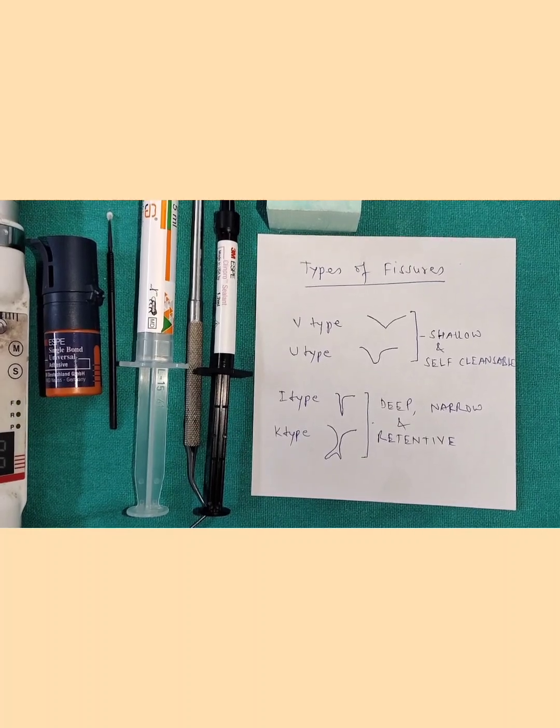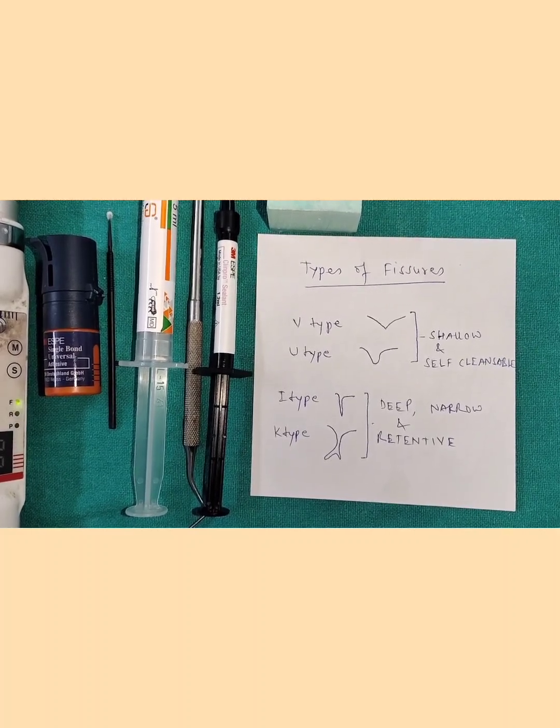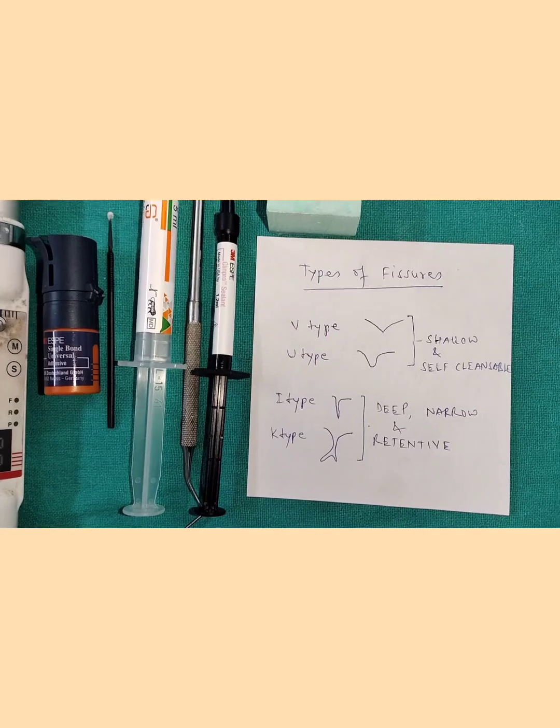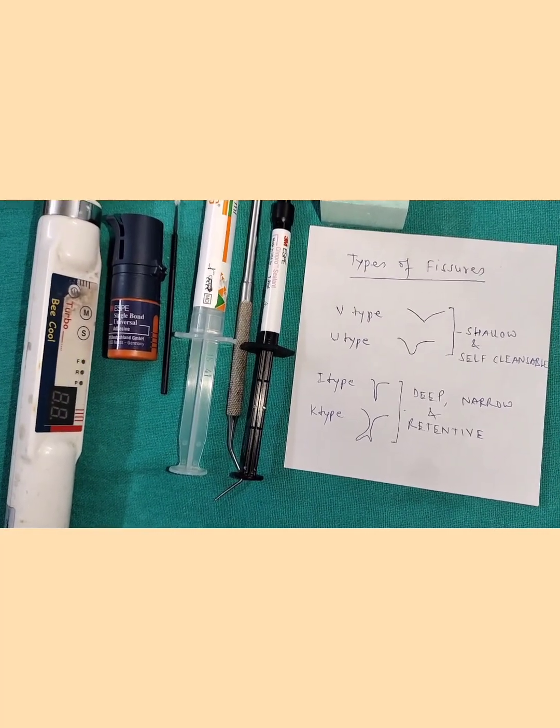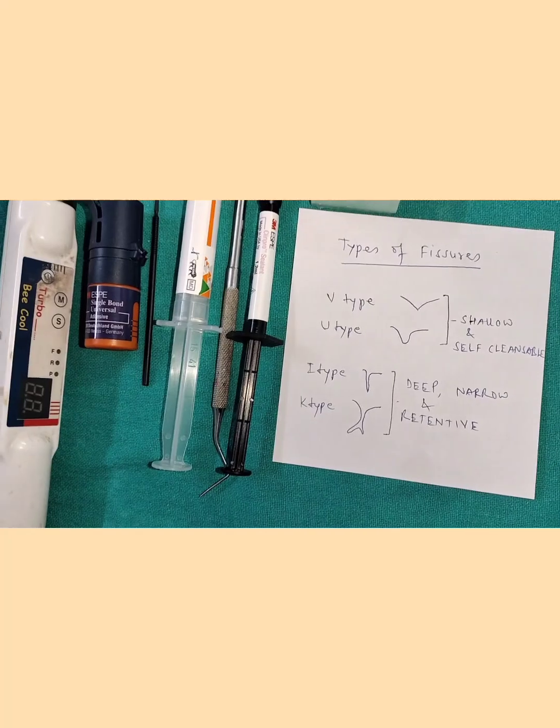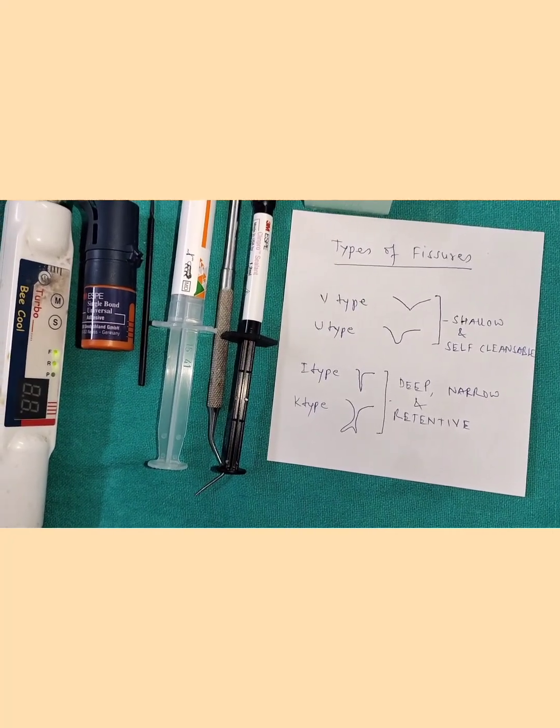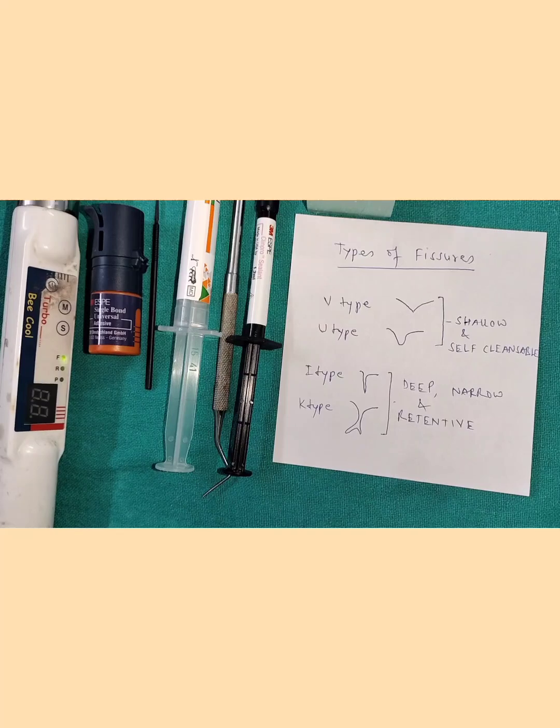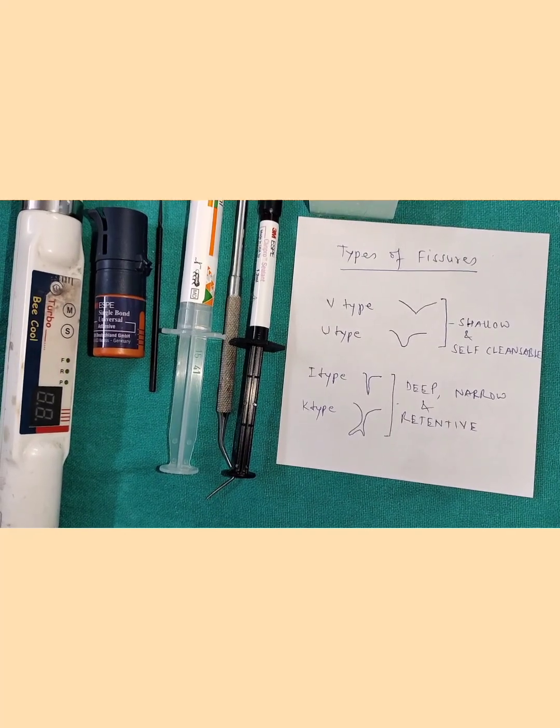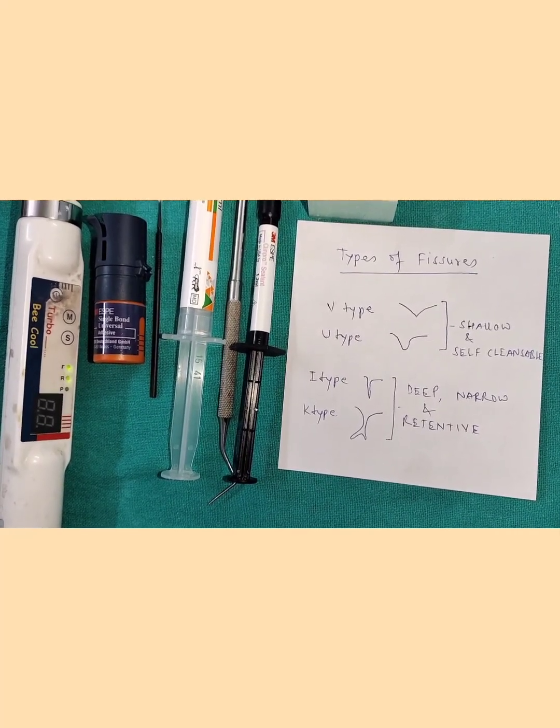Now what are pit and fissure sealants? Pit and fissure sealant according to ADA specification 39 are basically light cured or even self-cured, fluoride releasing, unfilled or lightly filled resins which are used to seal non-carious pits and fissures of deciduous or permanent teeth.